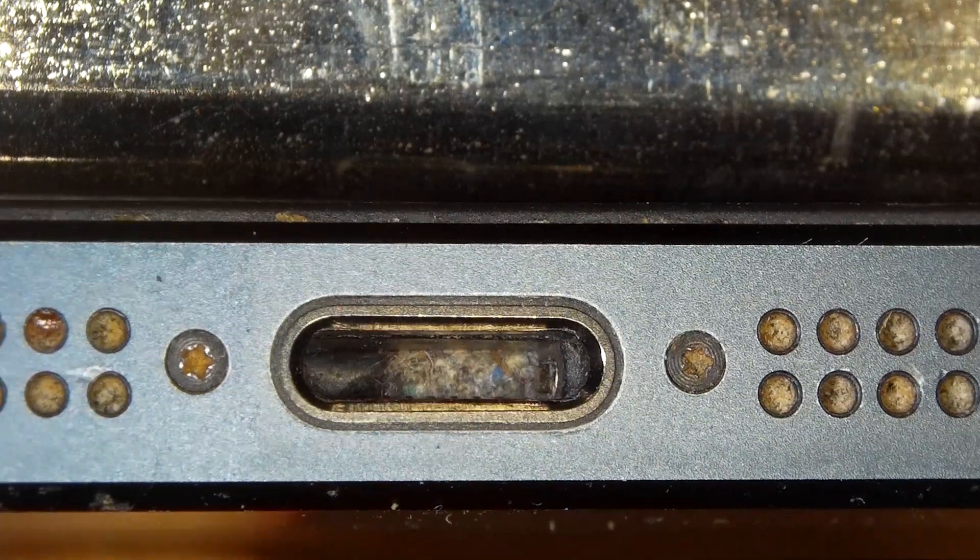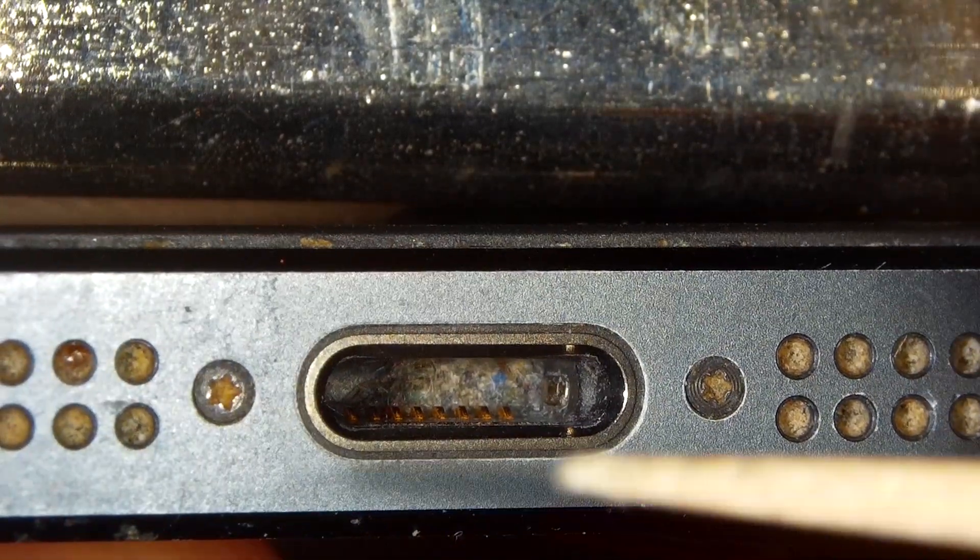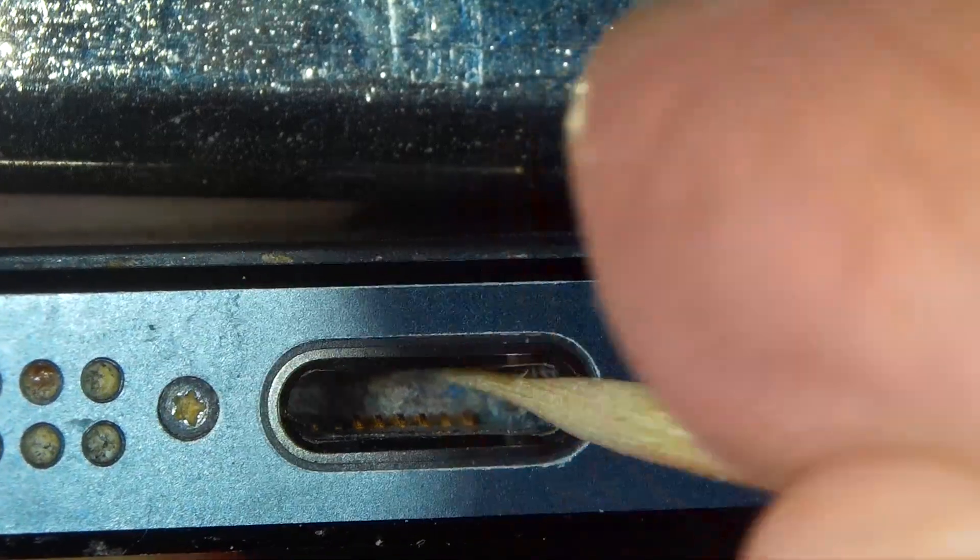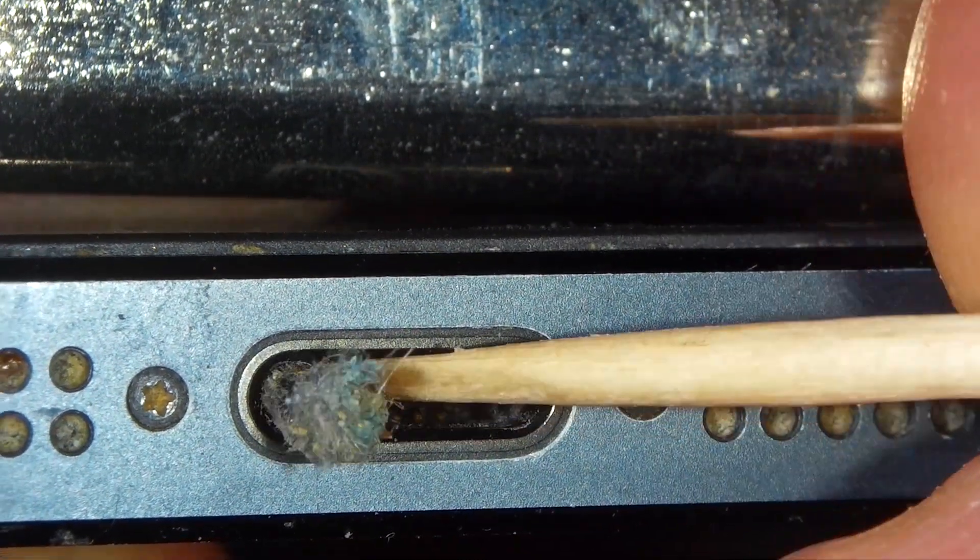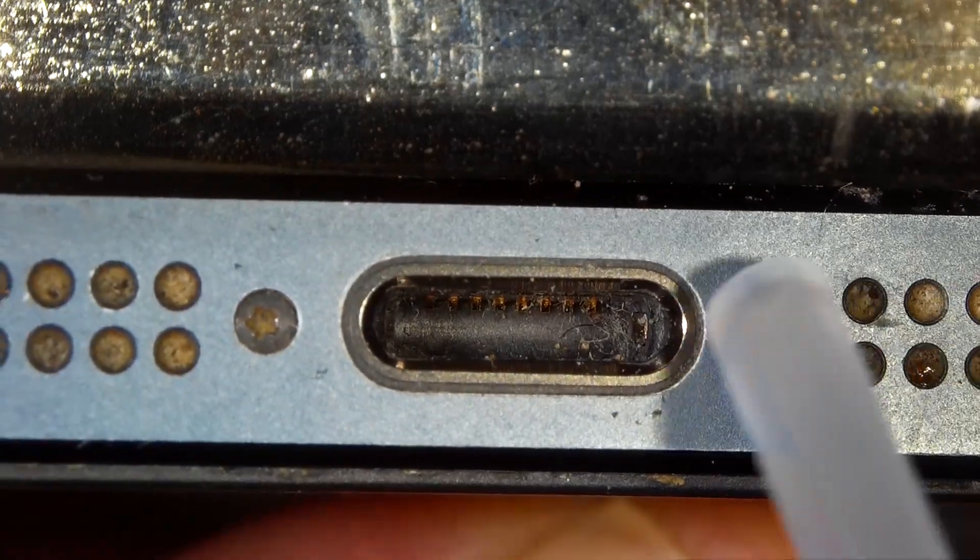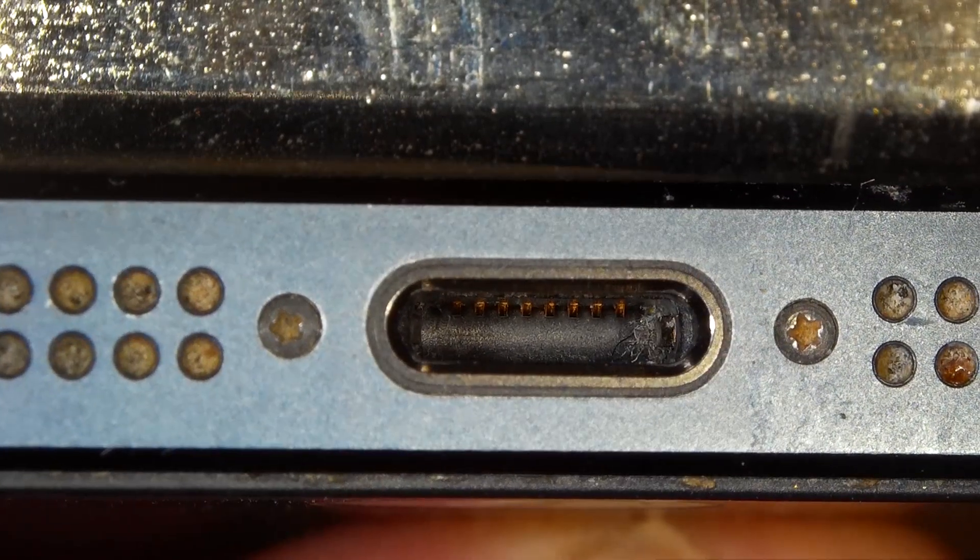You can blow gently using regulated air from a compressor or compressed air from a can, or if your mouth is dry, your lips or the hollow tube of a pen. Now your charge cord connector should plug in all the way.